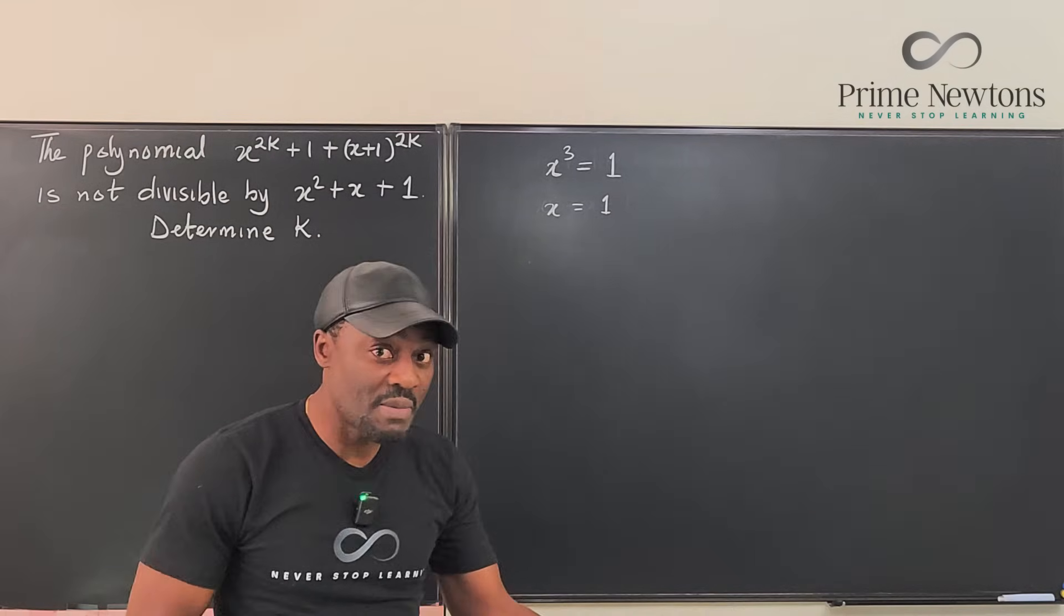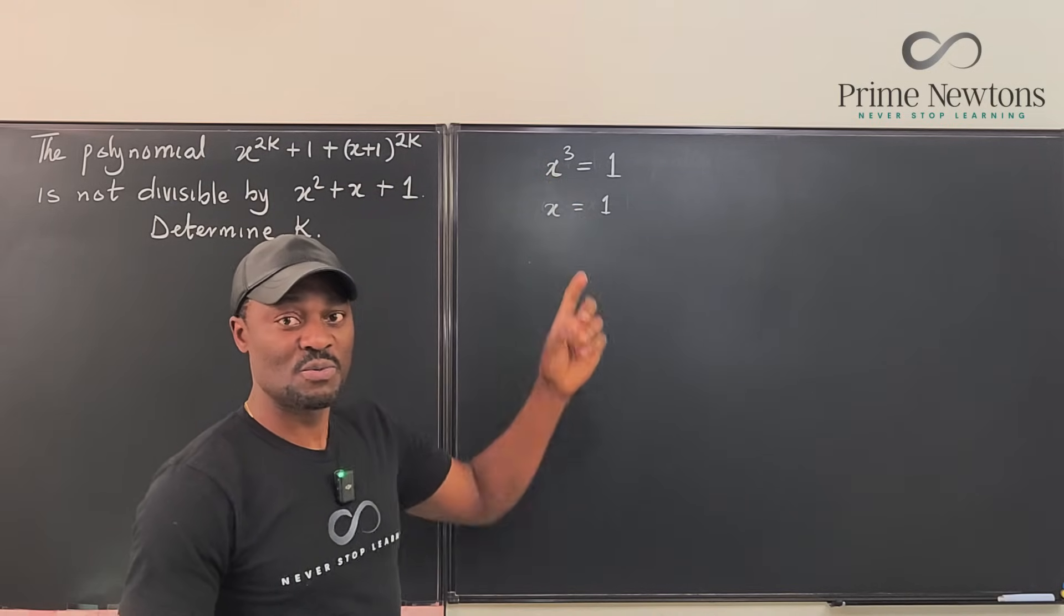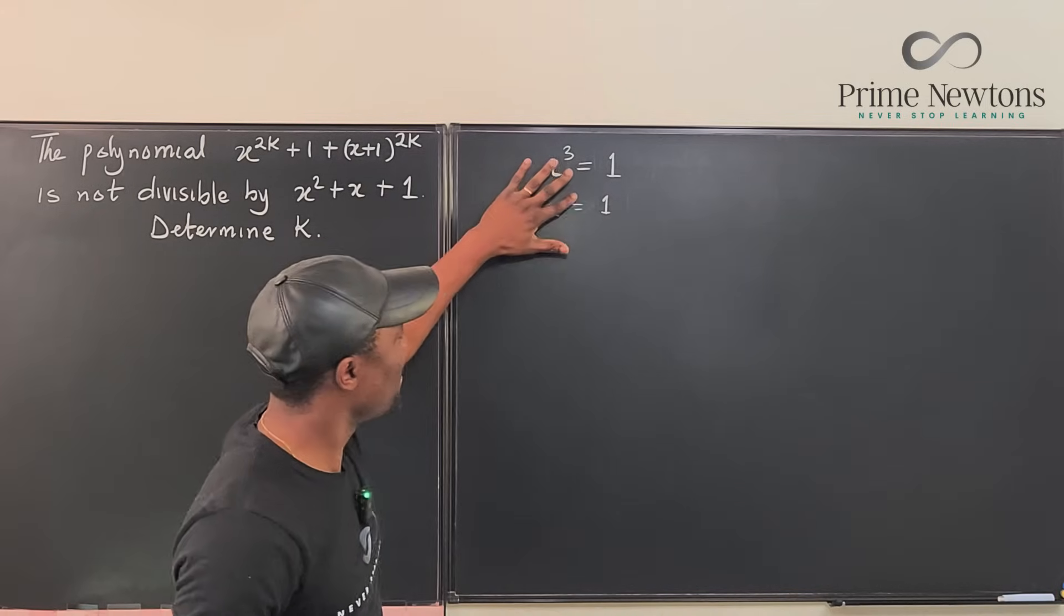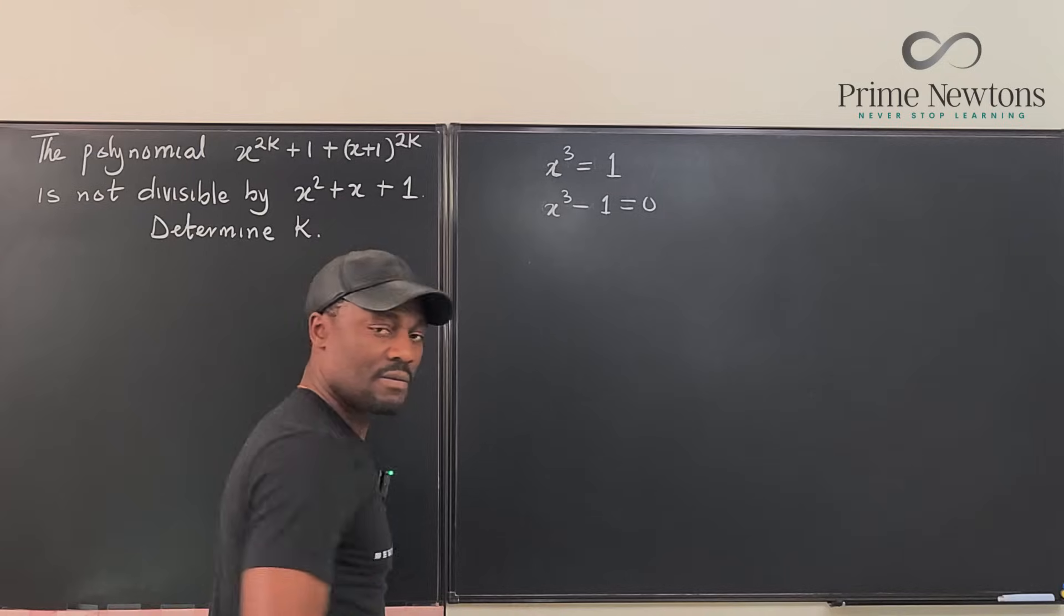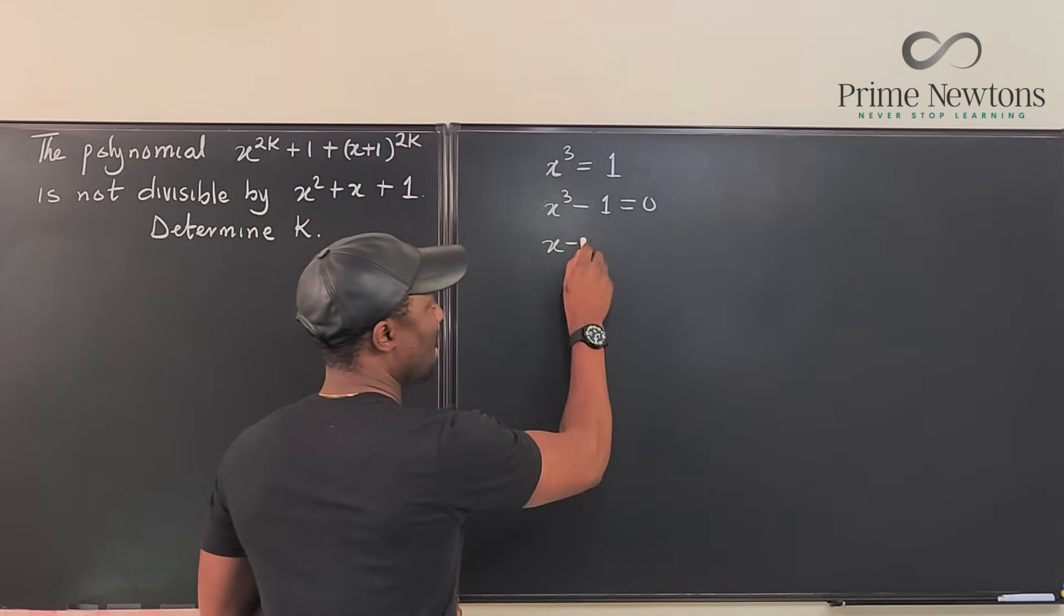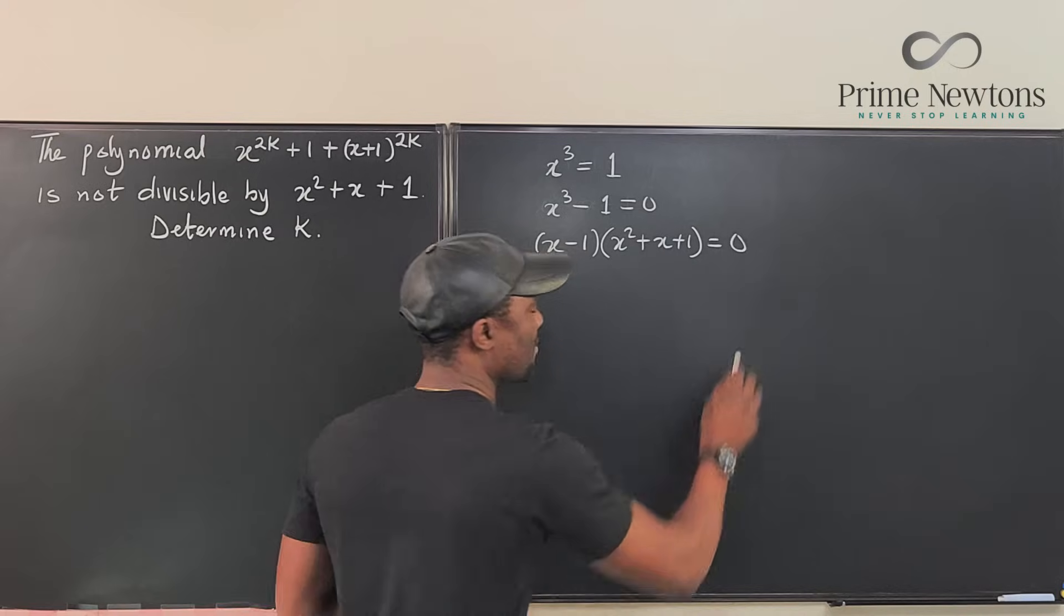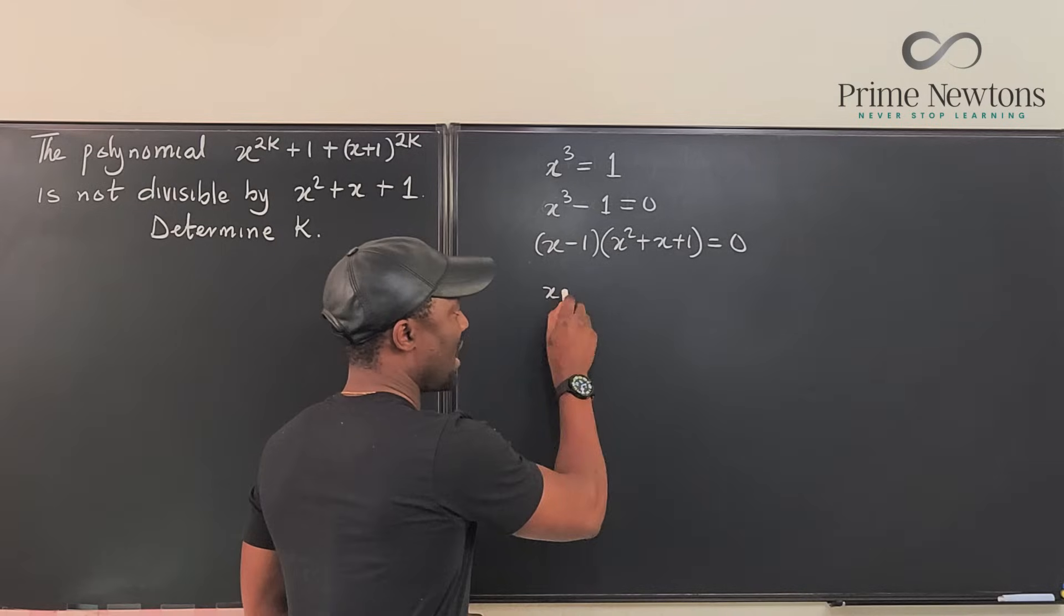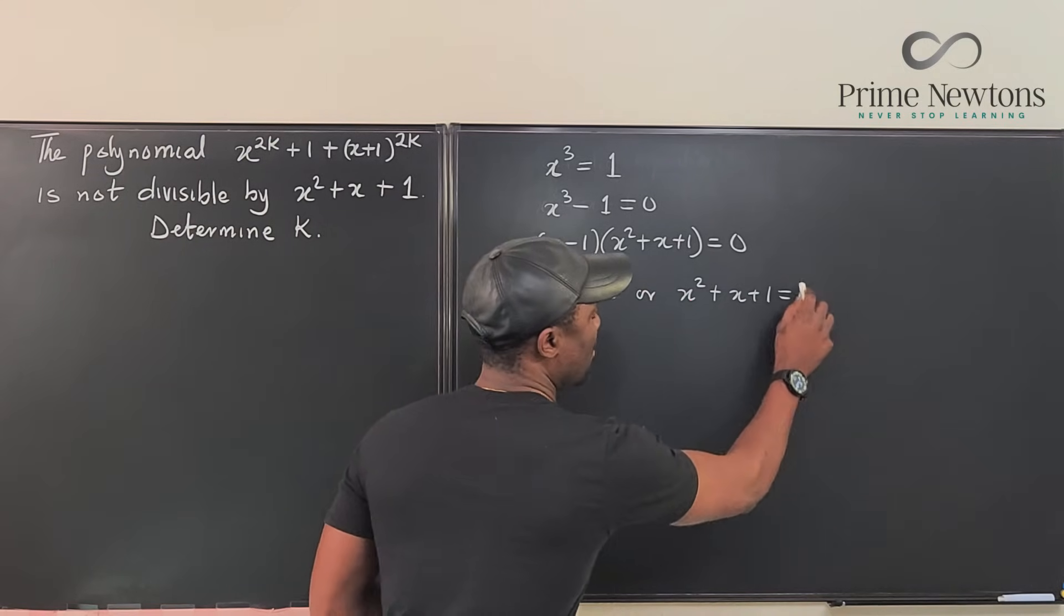But, according to the fundamental theorem of algebra, you can't get one answer if you have a third degree polynomial. You must get three answers. So, this is not how we solve this. What we do is, we move this one over to the left and we say this is equal to 0. And then we factor this using the difference of two cubes. We end up with x minus 1 times x squared plus x plus 1 equals 0.